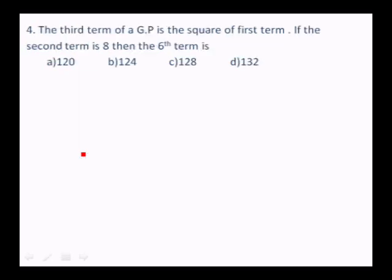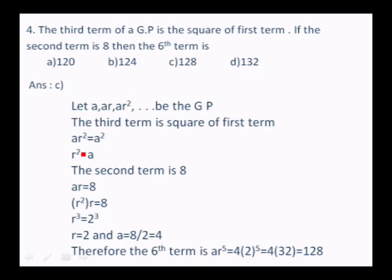GP Question 4: The third term of a GP is the square of the first term, and the second term is 8. Find the sixth term. Let the GP be a, ar, ar², ... Third term ar² = a², so r² = a. Second term ar = 8, substituting r² for a gives r³ = 8, so r = 2 and a = 4. The sixth term = ar⁵ = 4 × 32 = 128. Answer: option C.